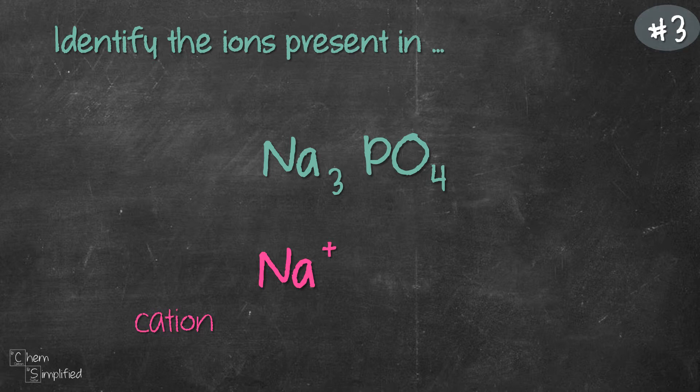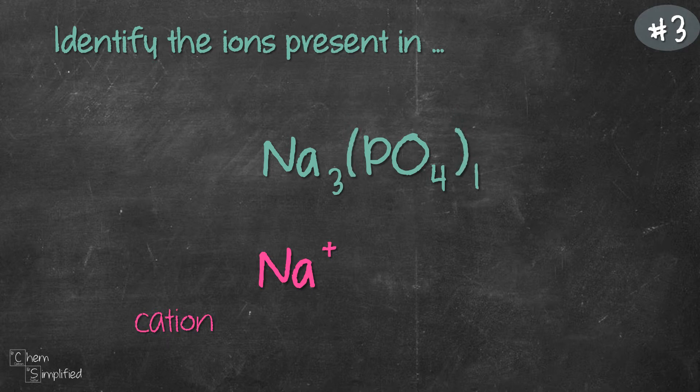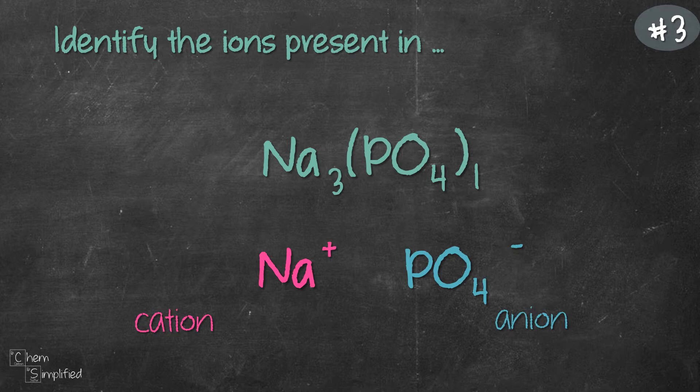It's written as a group. So that means we actually have one group of PO4. Our anion is going to be PO4 with some negative charge. We're going to figure it out.